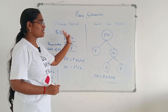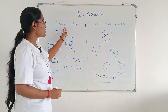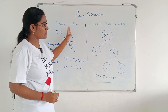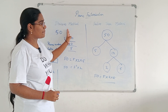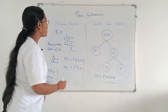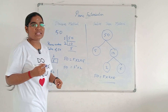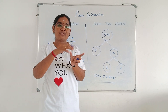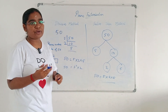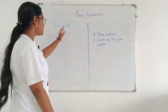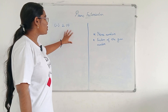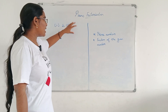Either of these methods you can use, but the division method is comparatively easier than the factor tree method. When dealing with 2-digit, 3-digit, or 4-digit problems, the division method will help you a lot. Now we are going to solve 210 — we are going to factorize it.